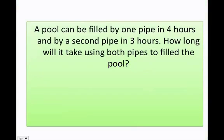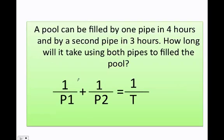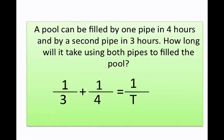Let's do another one. This is a typical problem I'm sure a lot of you have seen before. A pool can be filled by one pipe in four hours and by a second pipe in three hours. How long would it take using both pipes to fill the pool? I need to set it up the same way: one divided by pipe one plus one divided by pipe two equals one over t. If you had another pipe, you'd just add plus one over pipe three. Since they're filling the pool, I use a positive sign — if they were draining it, I'd use a negative sign, but that would be another problem. Pipe one takes four hours, pipe two takes three hours. Let's find t.